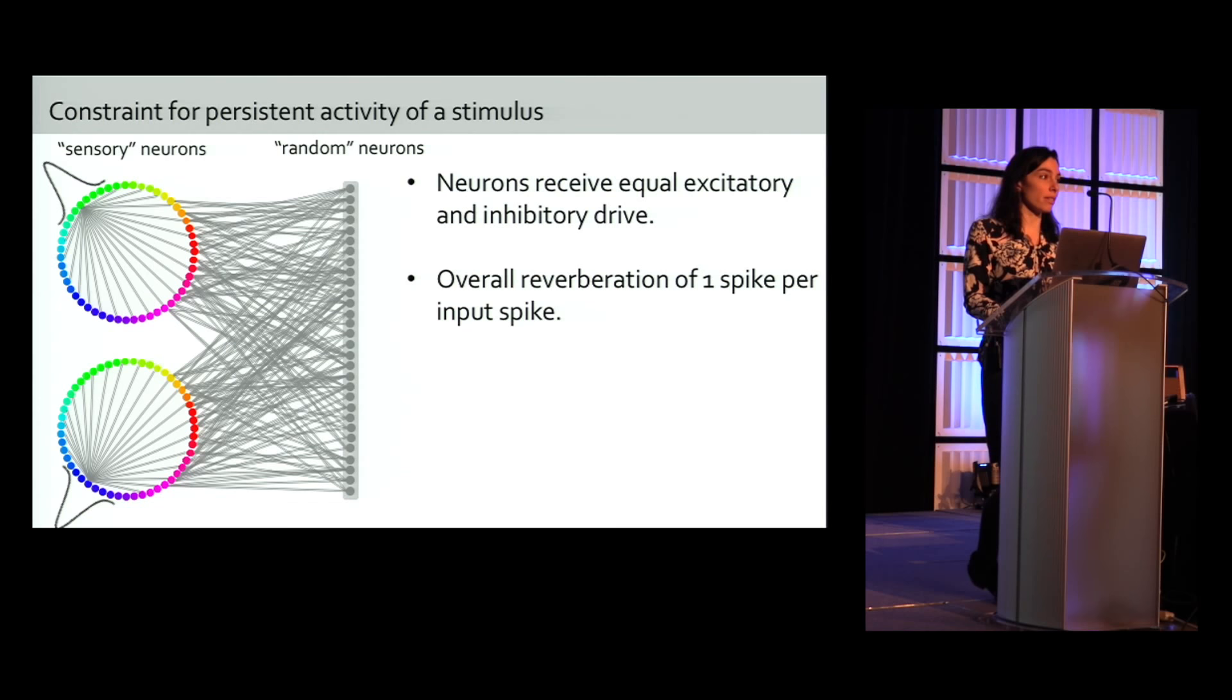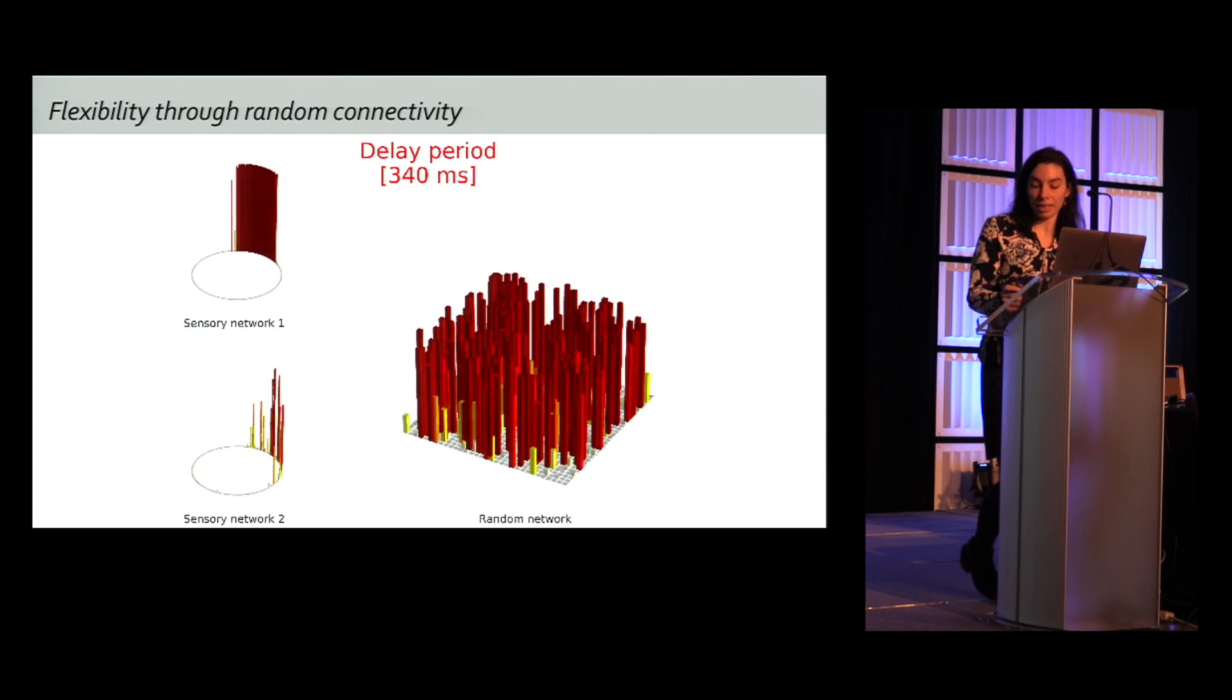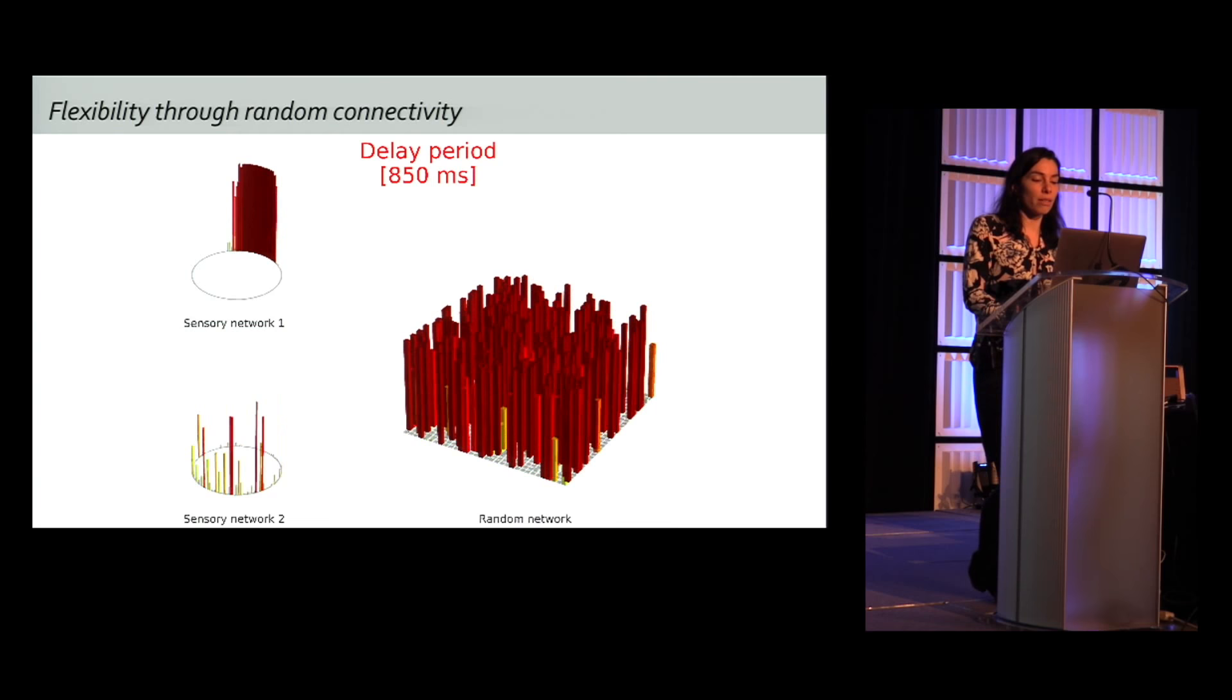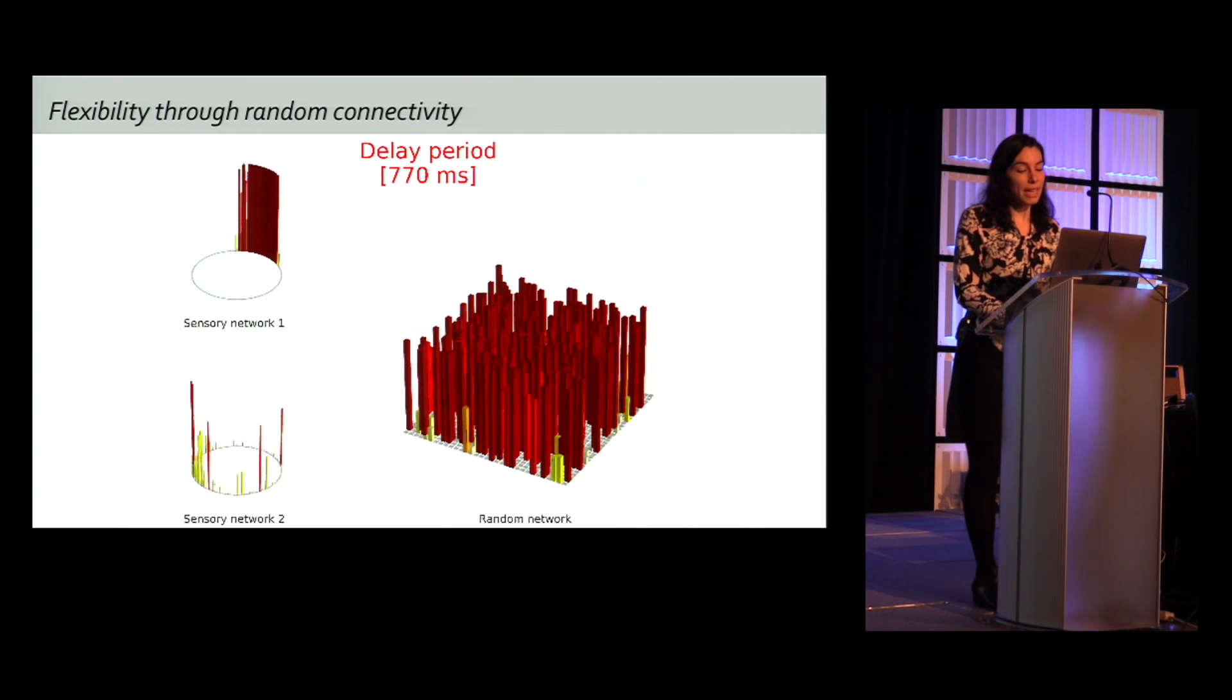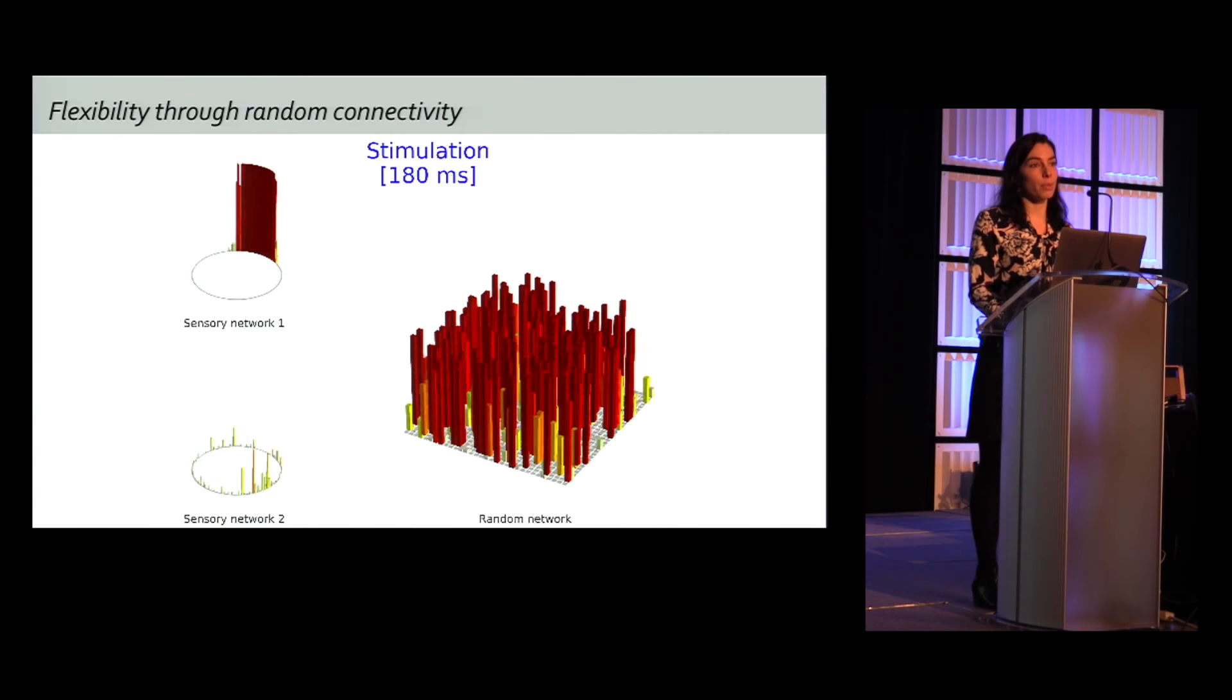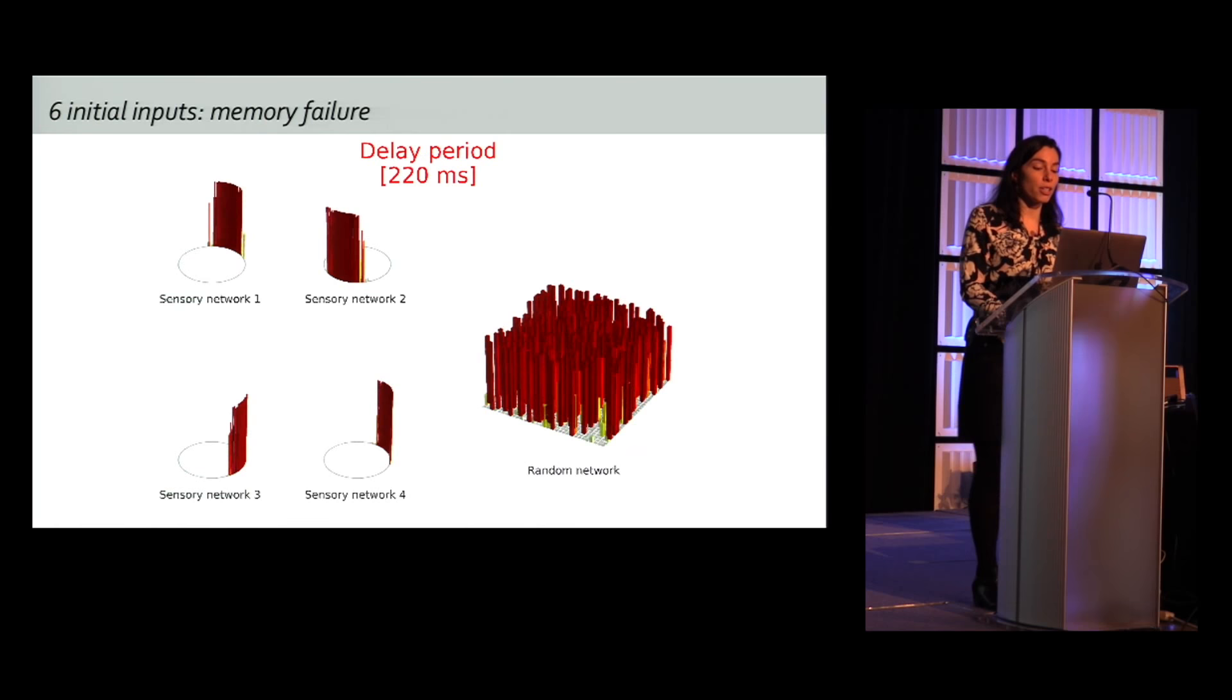So here is a 3D simulation of the network with one initial input in sensory network one. The simulation, the stimulation, sorry, lasts 100 milliseconds, and the network maintains its memory during a second after the input is removed. The network in simple does not evolve in learning, yet it is able to maintain any input to a given sensory network because of these random reciprocal connections. So it's flexible.